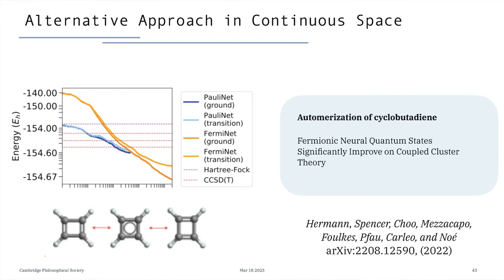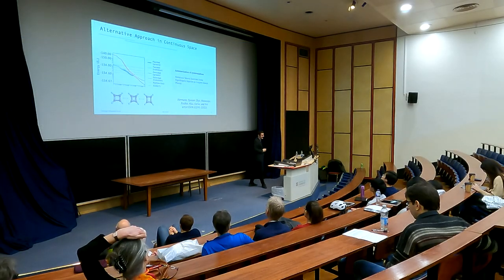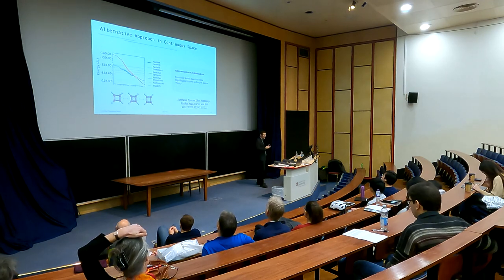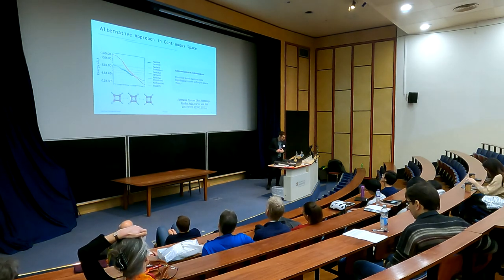There is also an alternative approach working directly in continuous space — with the actual positions of electrons rather than discretized orbitals. This approach, described in a comprehensive review of recent works, is in some sense more competitive. It can be used to study more complex phenomena, such as the isomerization of cyclobutadiene. In most cases, neural network approaches are able to improve on most existing theoretical predictions done with more established techniques, at least on relatively small molecules.